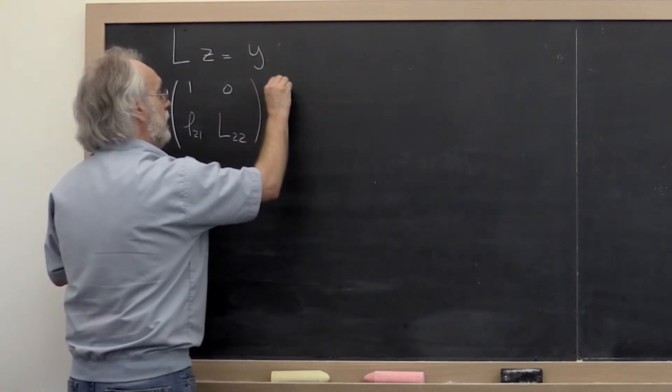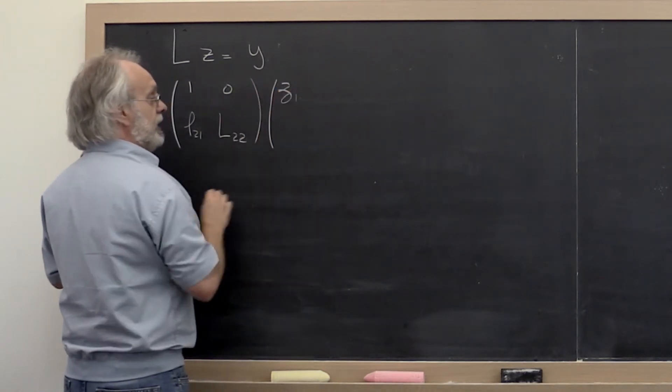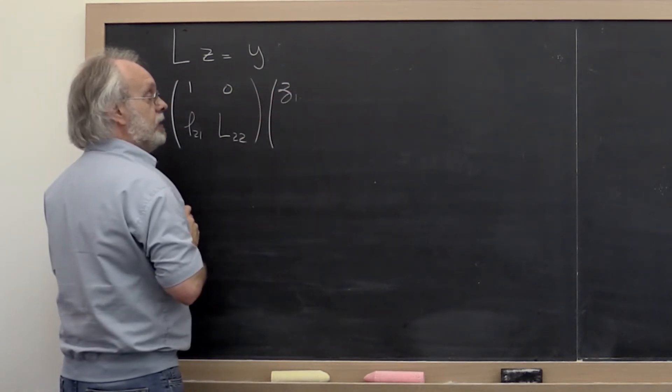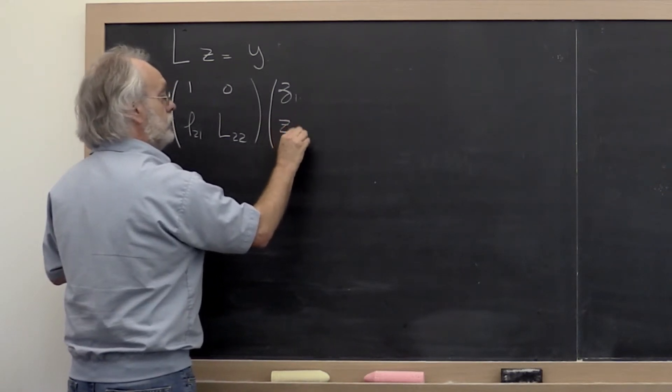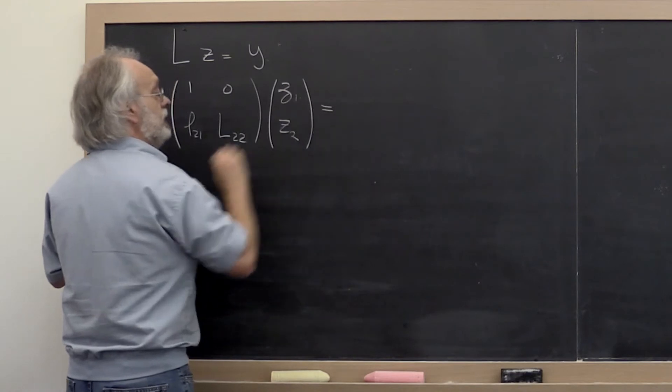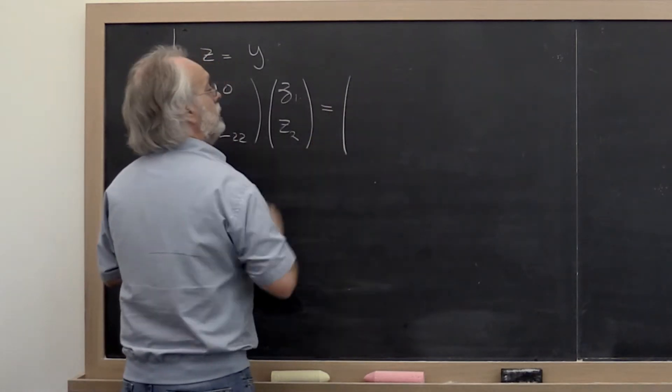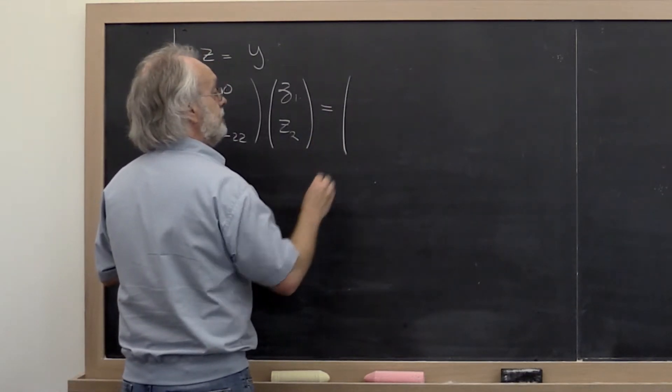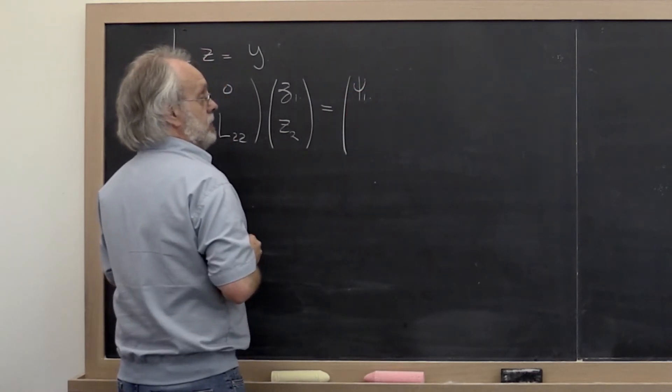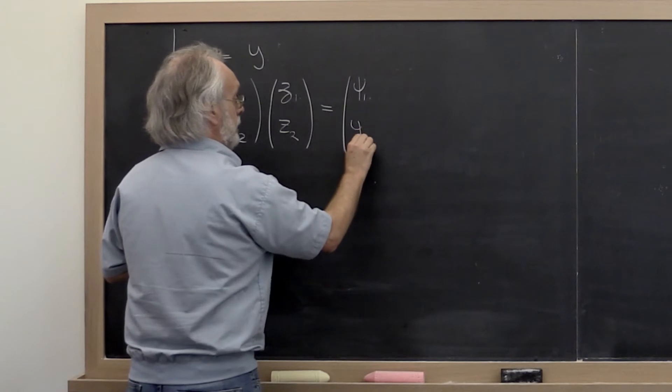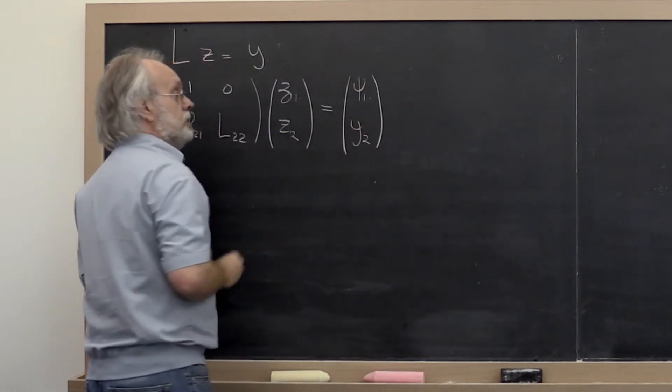And then let's take z and let's partition it into zeta_1—we use a Greek letter zeta because it's a scalar—and z_2. And that has to be equal to the vector exposing the first element as psi_1 and the rest of that vector as y_2.